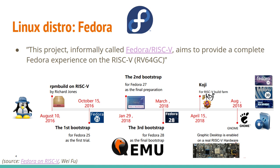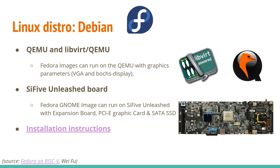What about Linux distros? Fedora has a project called Fedora RISC-V, which is a port of Fedora to RISC-V with the aim of providing the full Fedora experience. They've been working on this for several years. One way they do this is by providing Fedora images that can be booted on QEMU if you don't have hardware. There's also the SiFive HiFive Unleashed board — there are a few of them but they're kind of rare. For Fedora they're using a mix of virtualization on powerful x86 servers and a limited number of these hardware boards. There are installation instructions for running Fedora RISC-V under QEMU on your laptop or desktop.